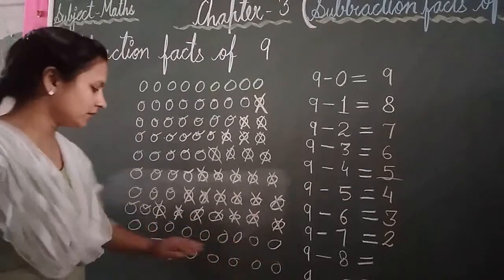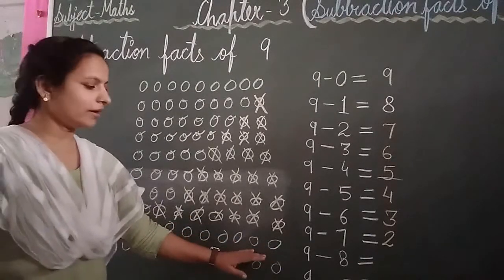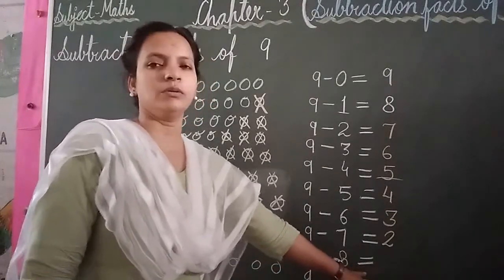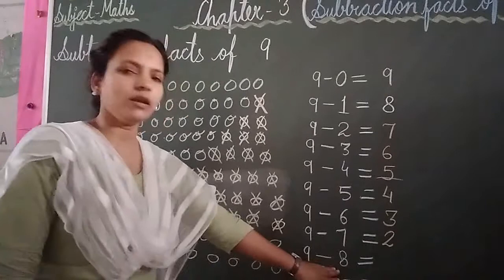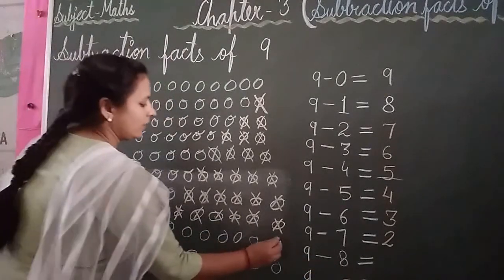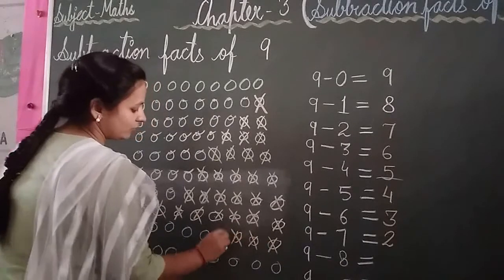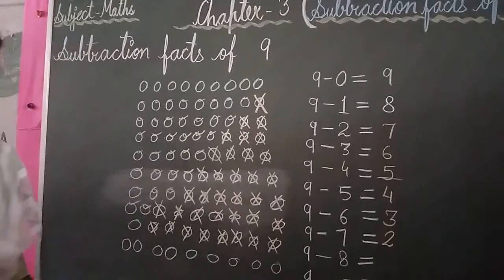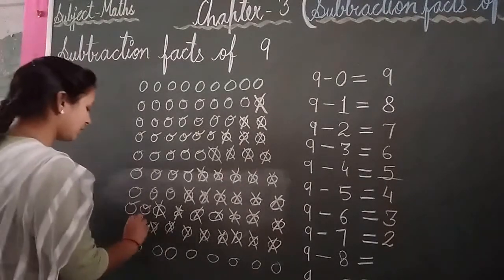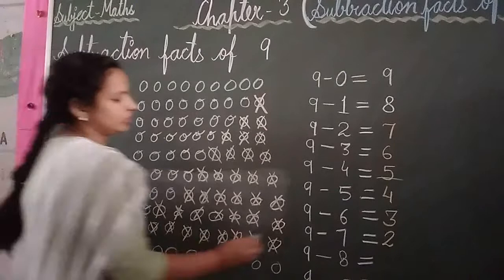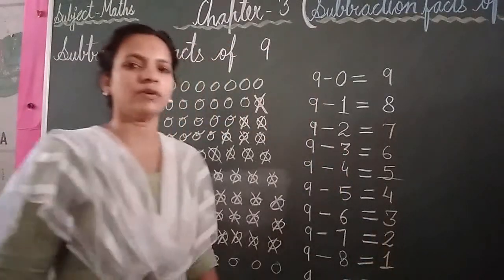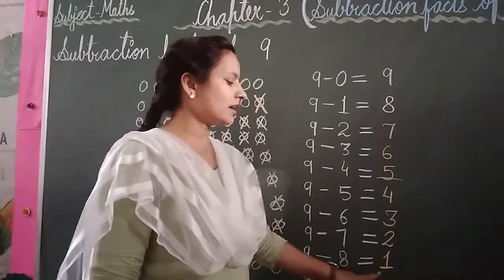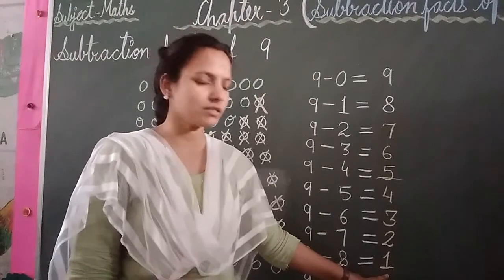Again draw your 9 balls. Write your digit: 9 minus 8. Cross out 8 balls: 1, 2, 3, 4, 5, 6, 7, 8. Count the balls left: 1. How many balls are left? 1. 9 minus 8 equal to 1. The answer is 1.